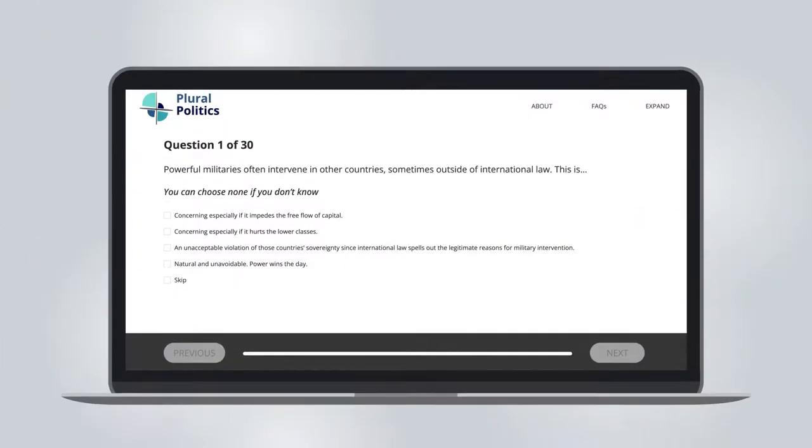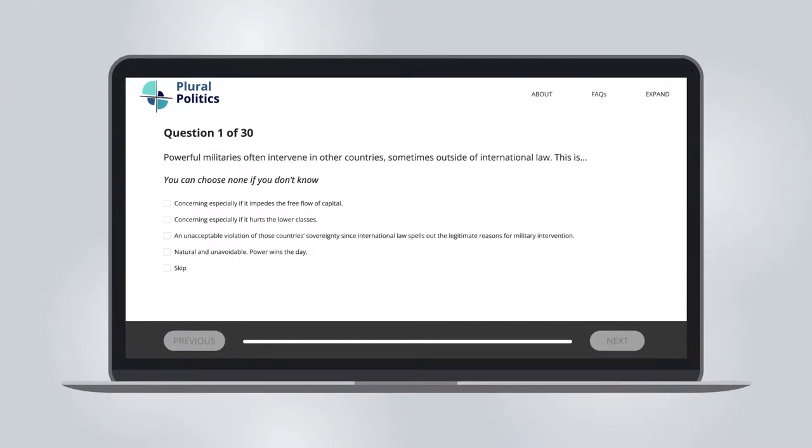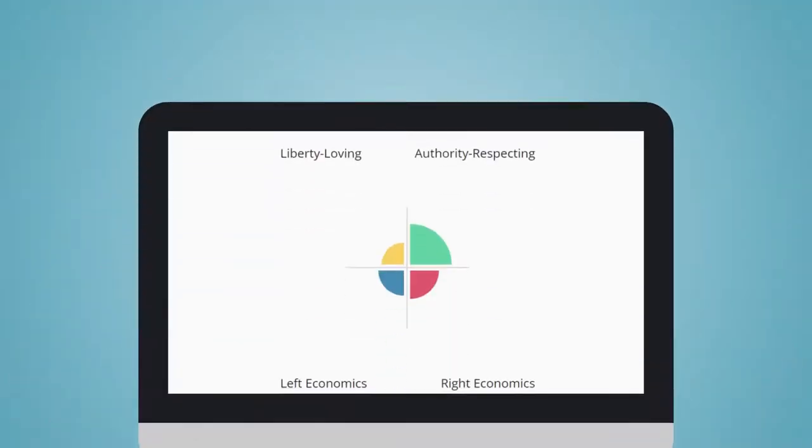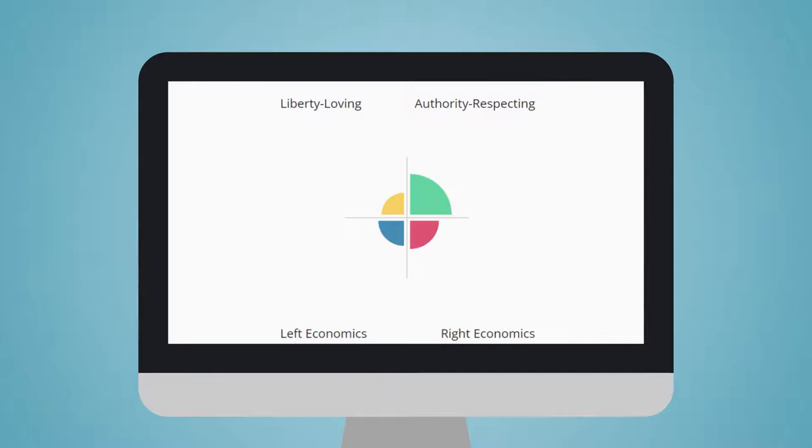It's a test meant to bring awareness to political flexibility, growth, and civic understanding. Your test result is a graph depicting your political sentiments across four areas. These will sound familiar to many: right economics, left economics, liberty loving, and authority respecting.